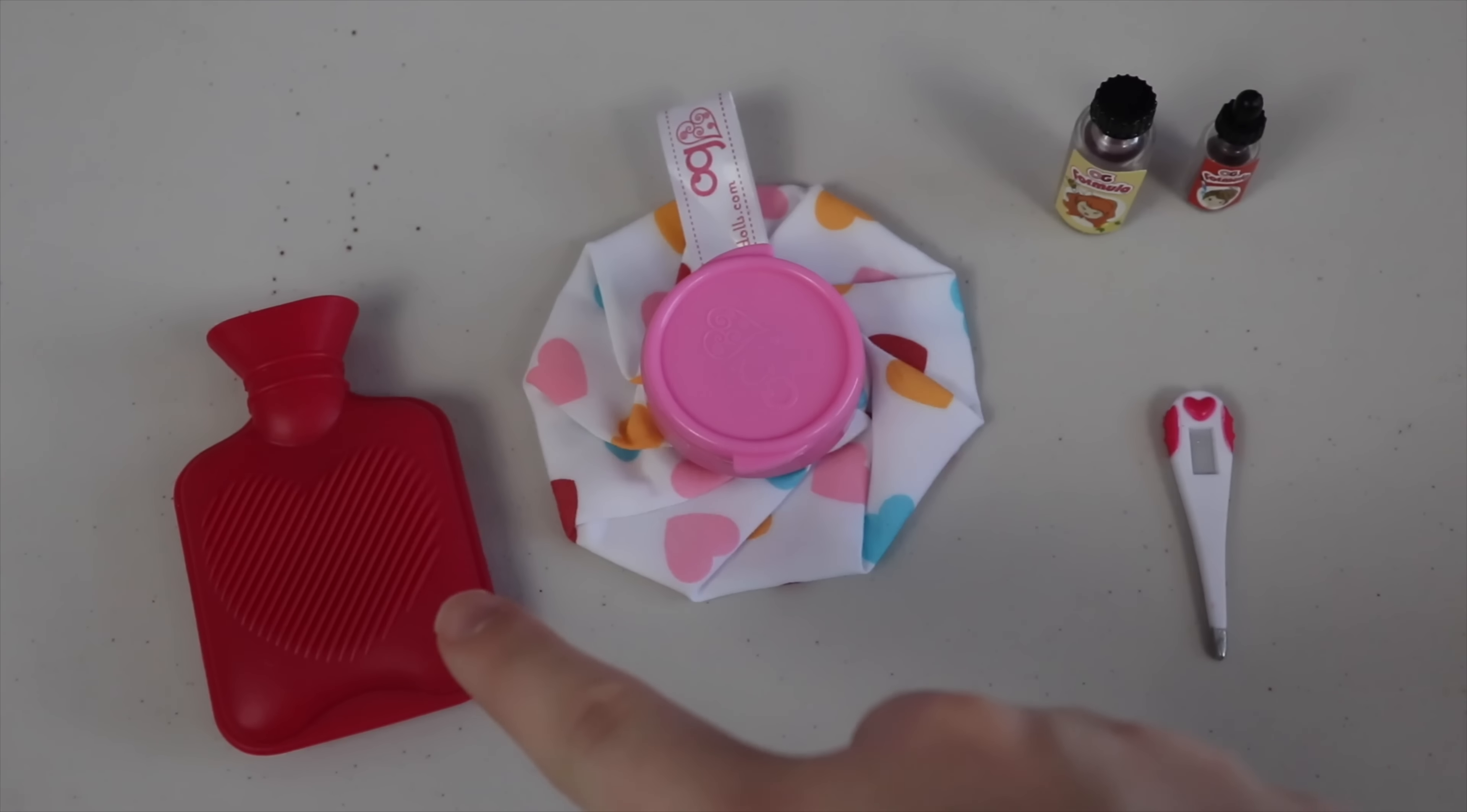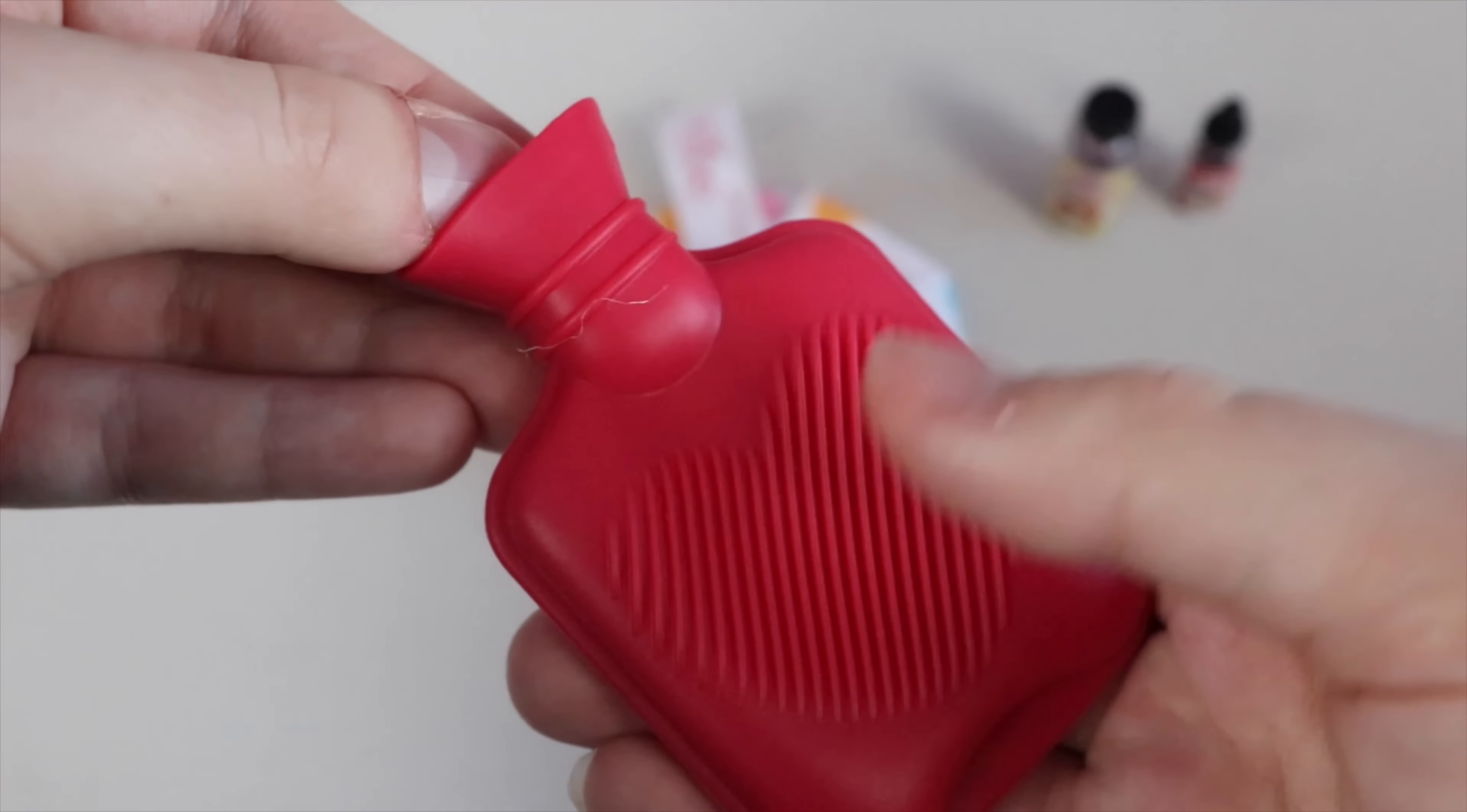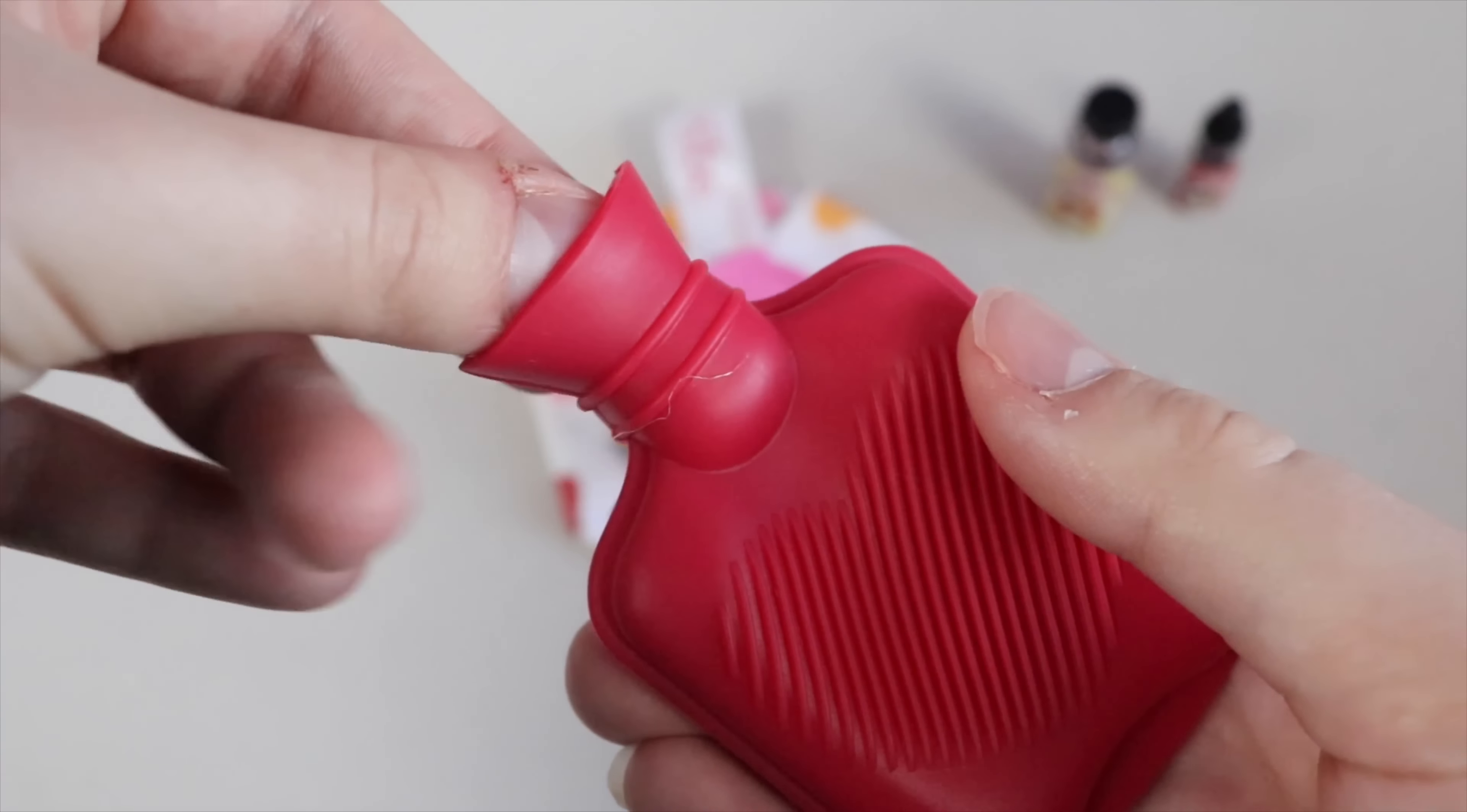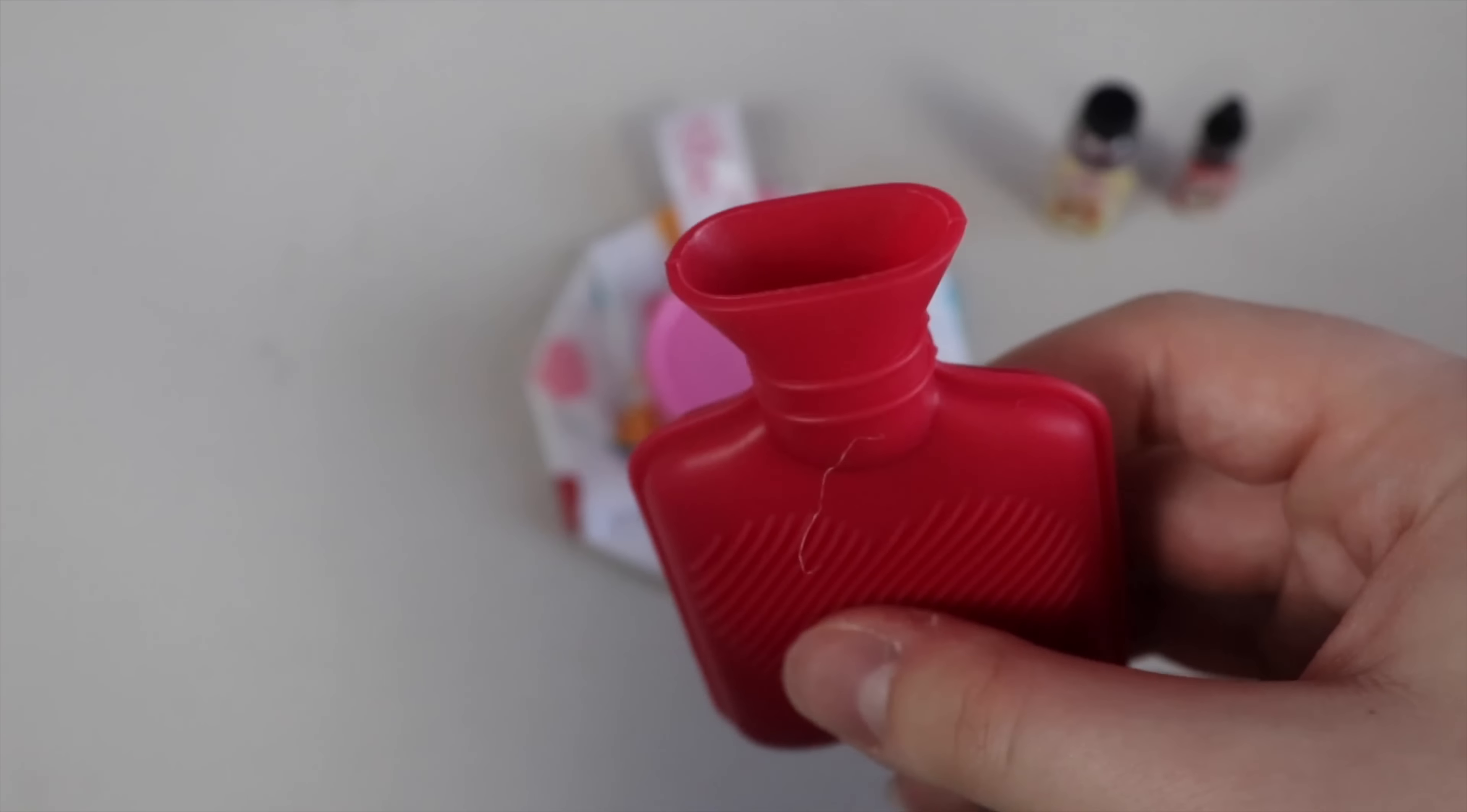We have a hot water bottle, an ice pack, a thermometer, a bottle of cough syrup, and a bottle of ear drops. The hot water bottle is made of a squishy silicone material, and the inside of it pops off, so you can pretend to fill it up for your doll.